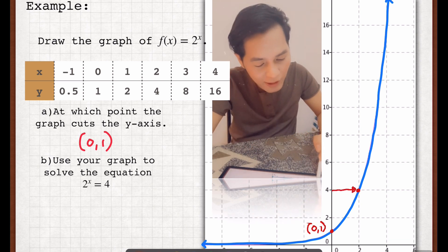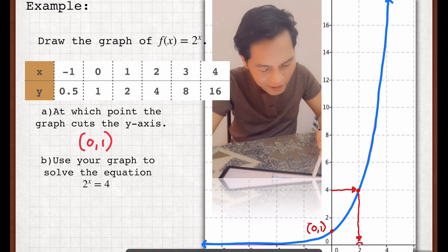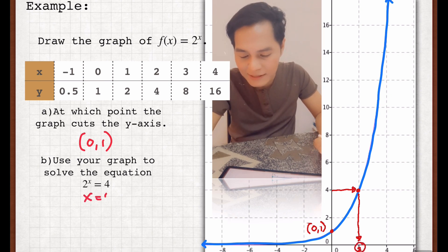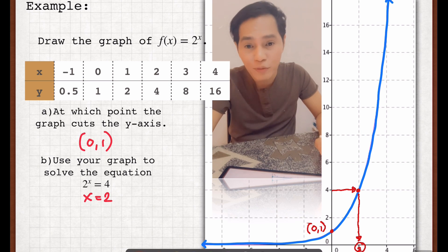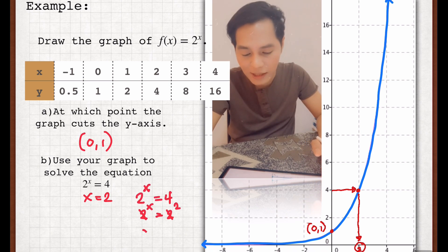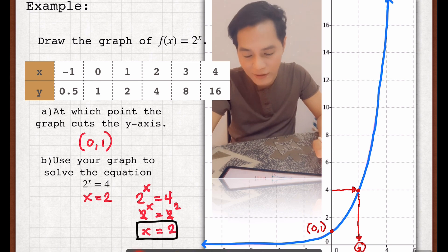4, and then check out correspondingly the value of x. And that is equal to 2. So therefore, x = 2. How to double-check our work? Just simply solve algebraically through exponential function. So there you go, the value of x is equal to 2.